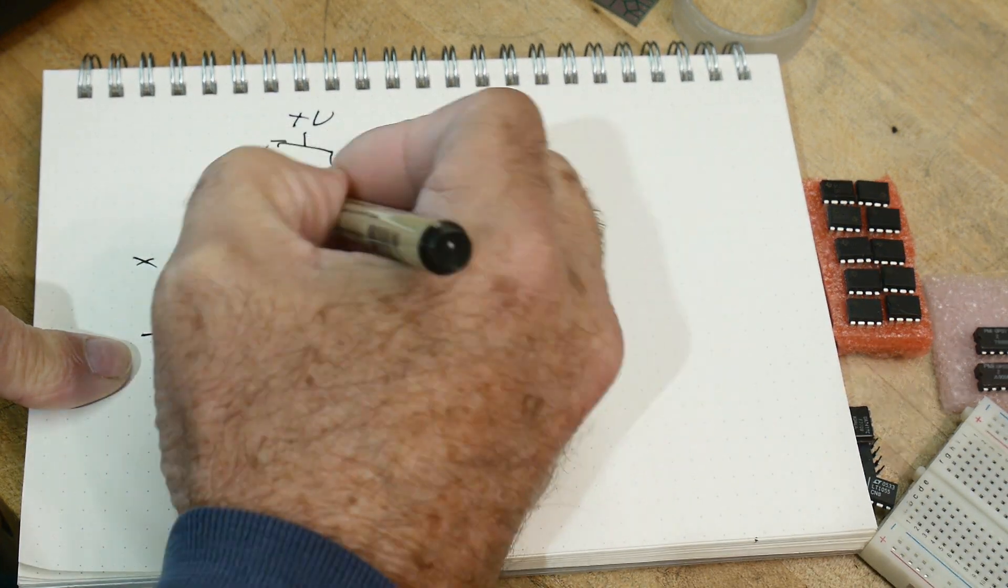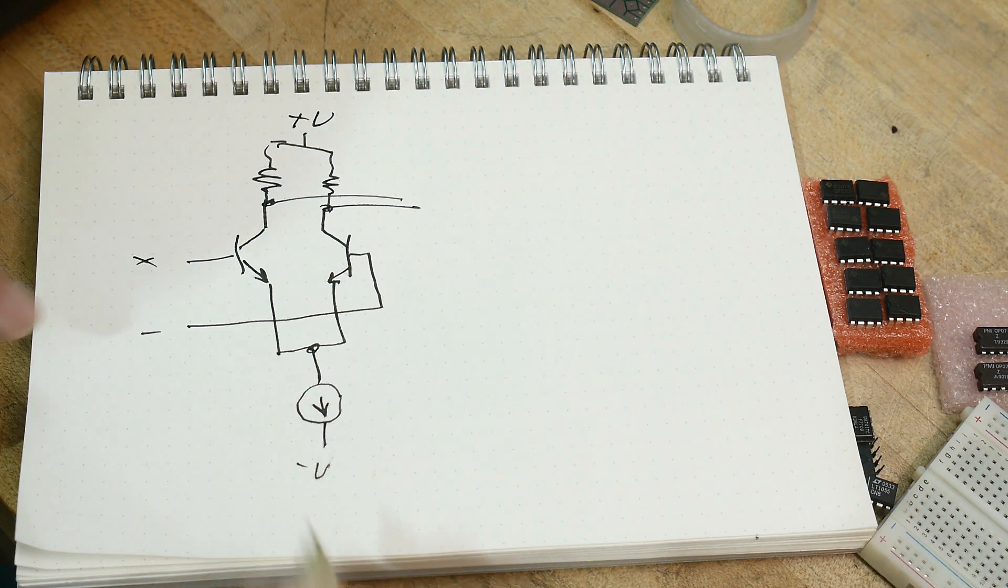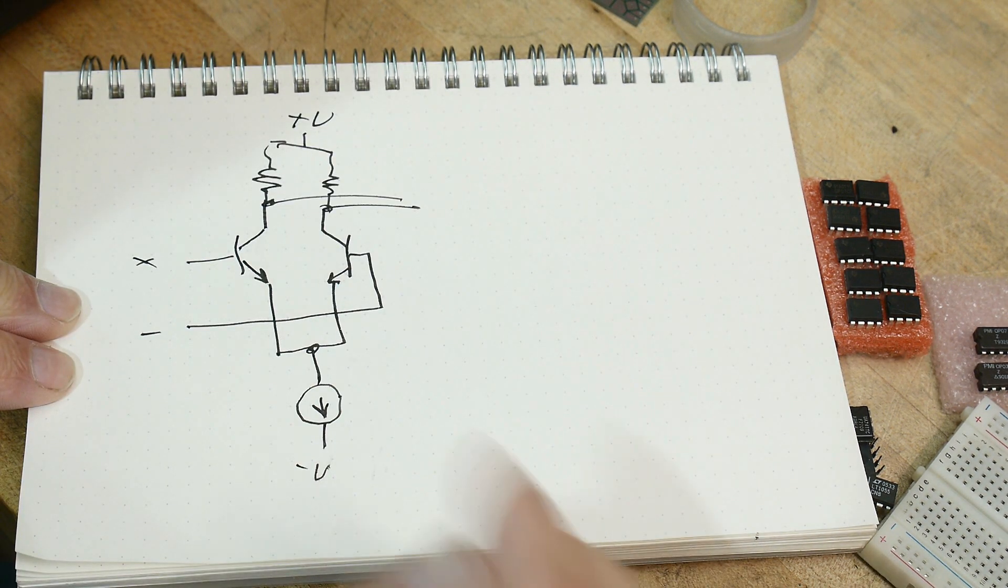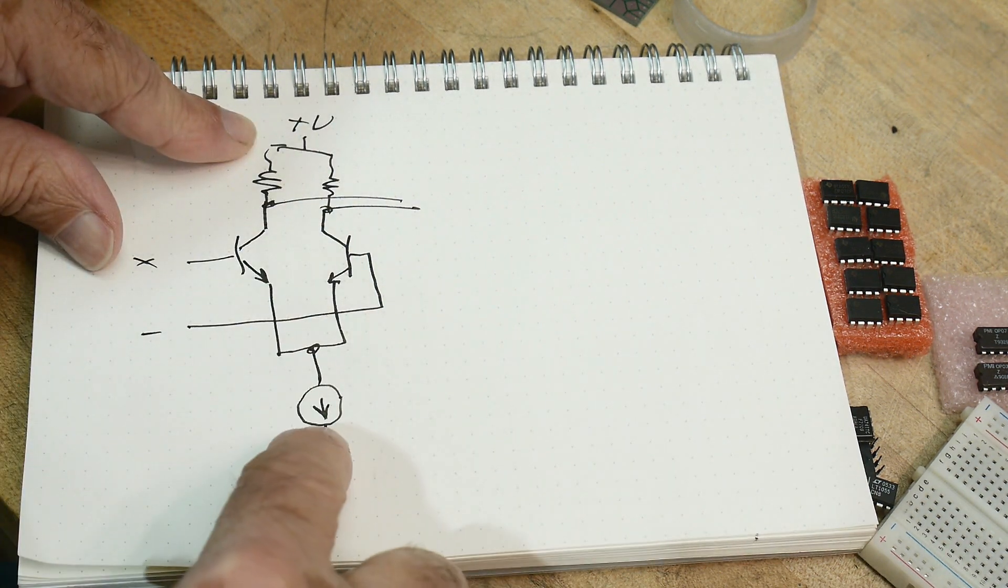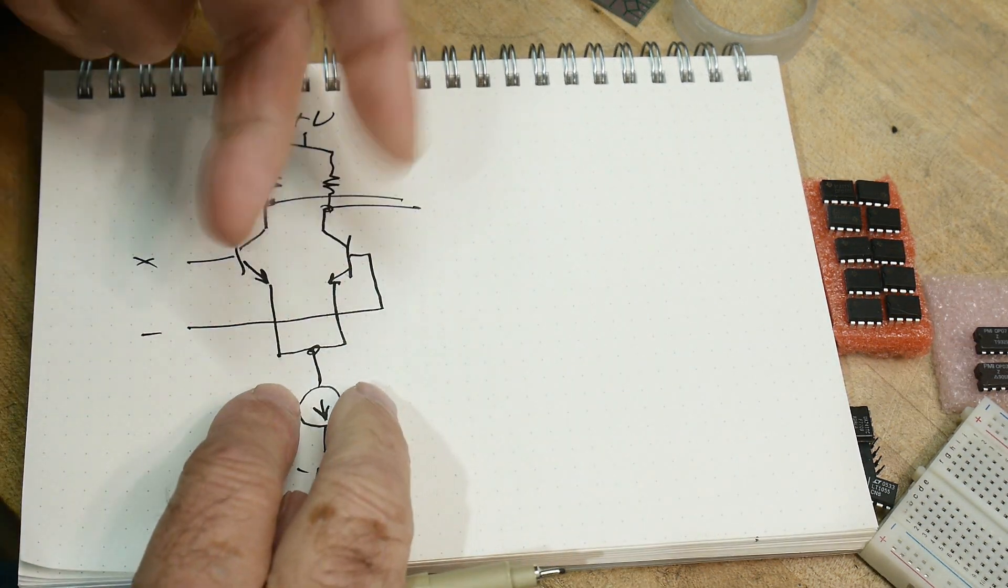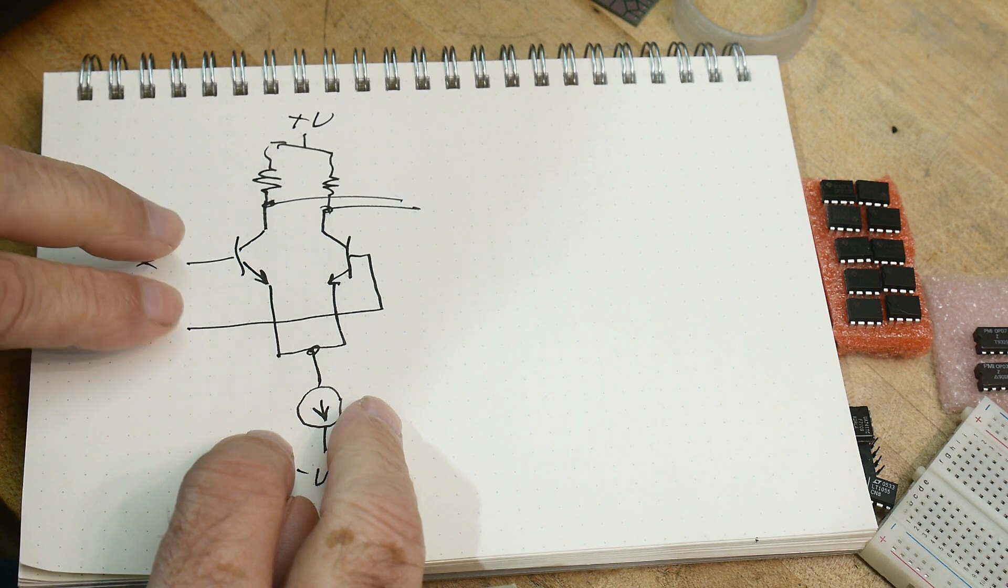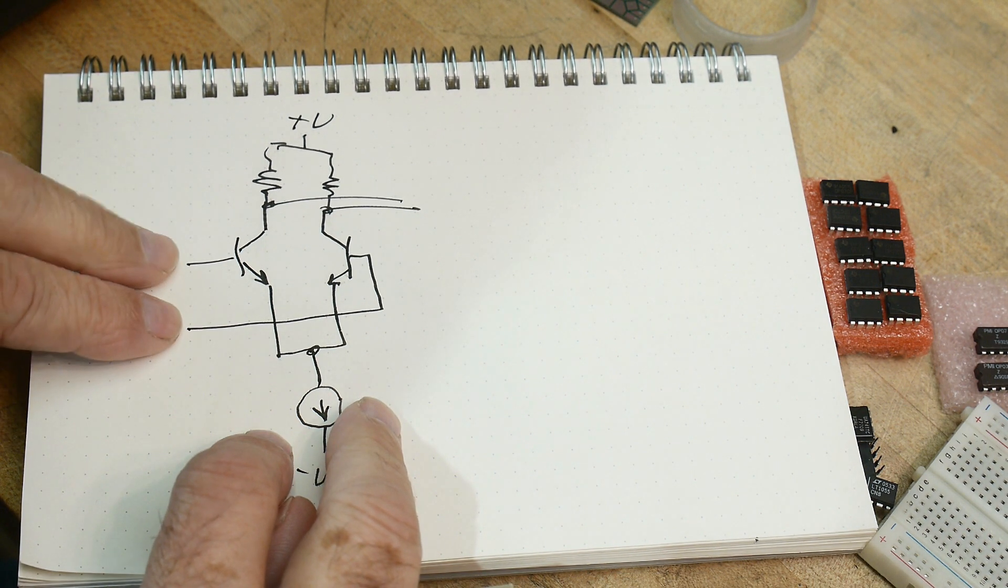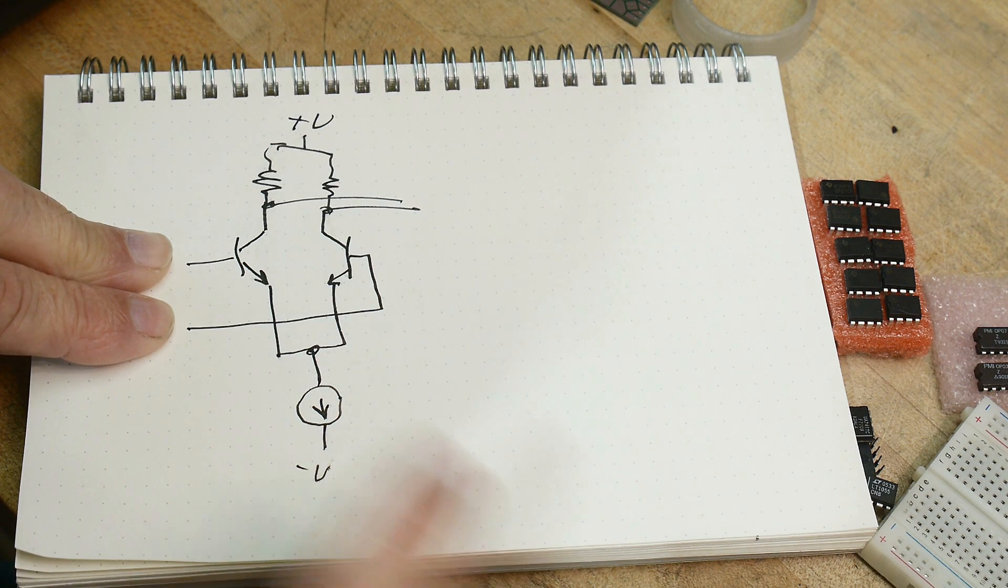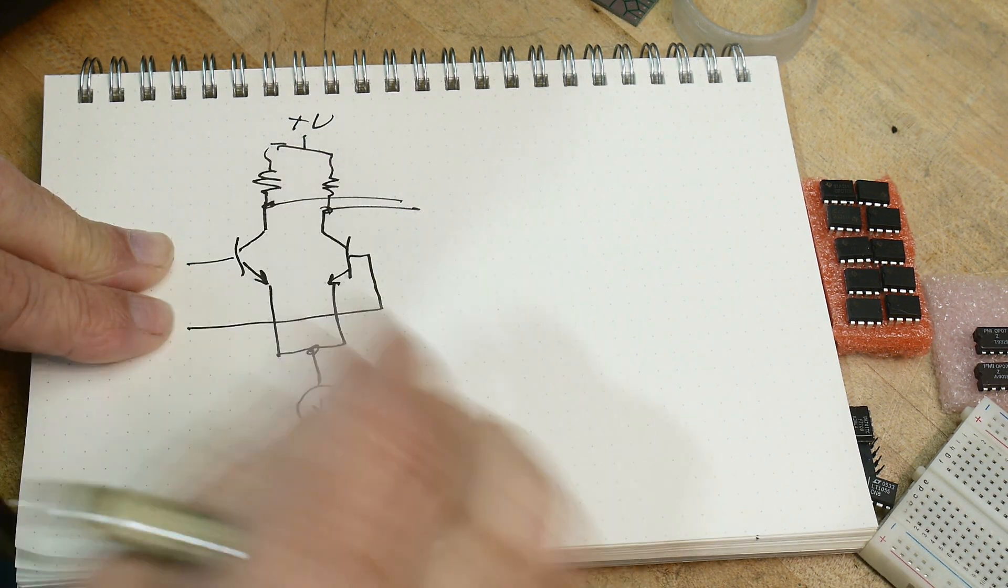And then you either take the output off of one or both of these points here and then go do something with it. So the way that these things work is current switching. I think I described it as a teeter-totter. So if this one's bigger then the current flows this way and no current flows over here. And if you go the opposite way, if you turn this one on, then the current goes over here and doesn't go over here. So the current's always flip-flopping whether the current goes this way or that way.